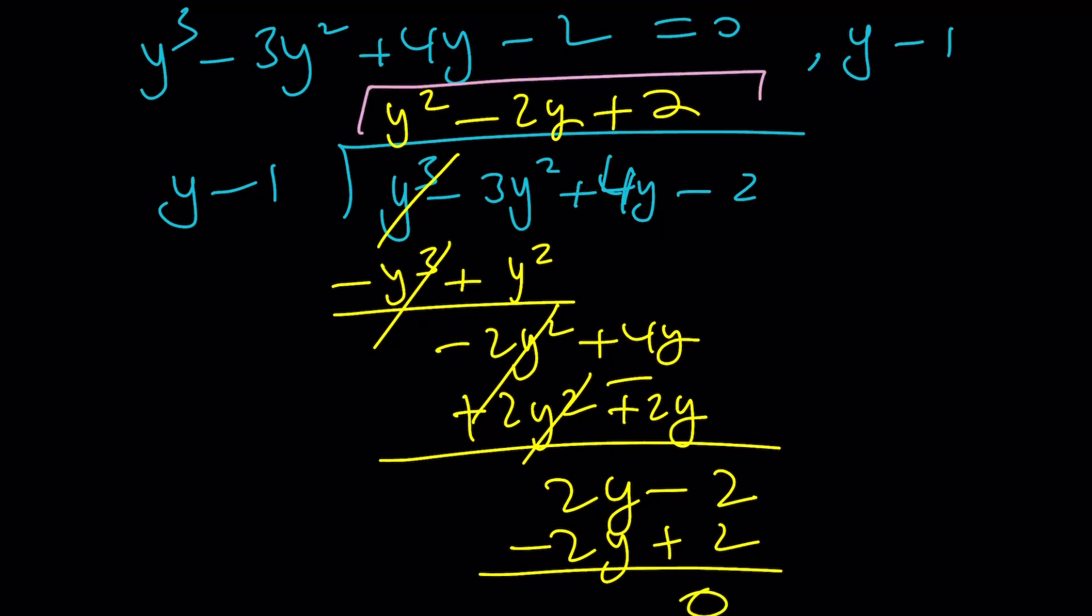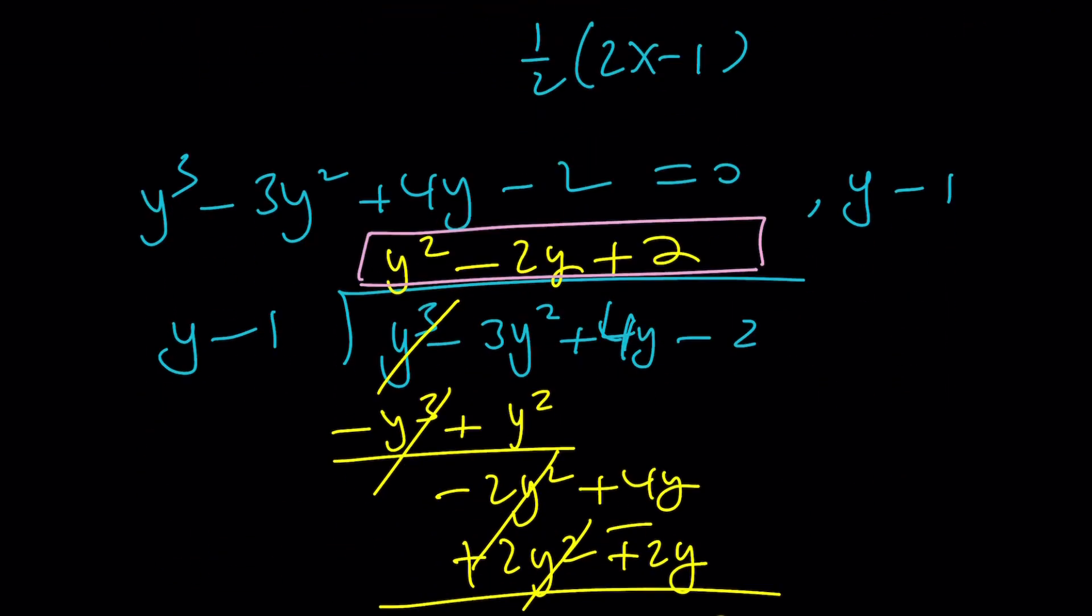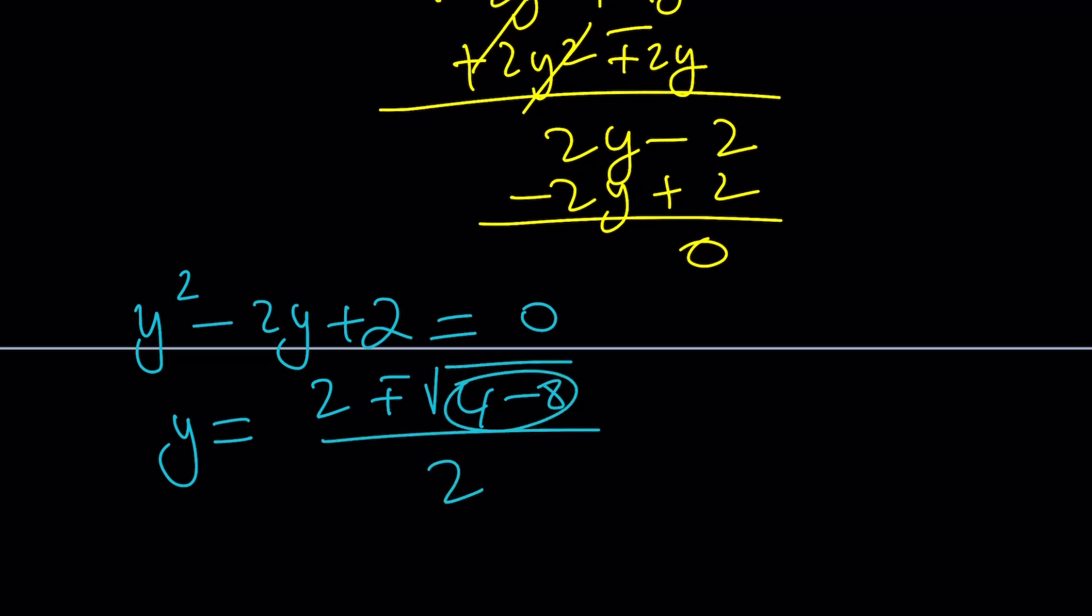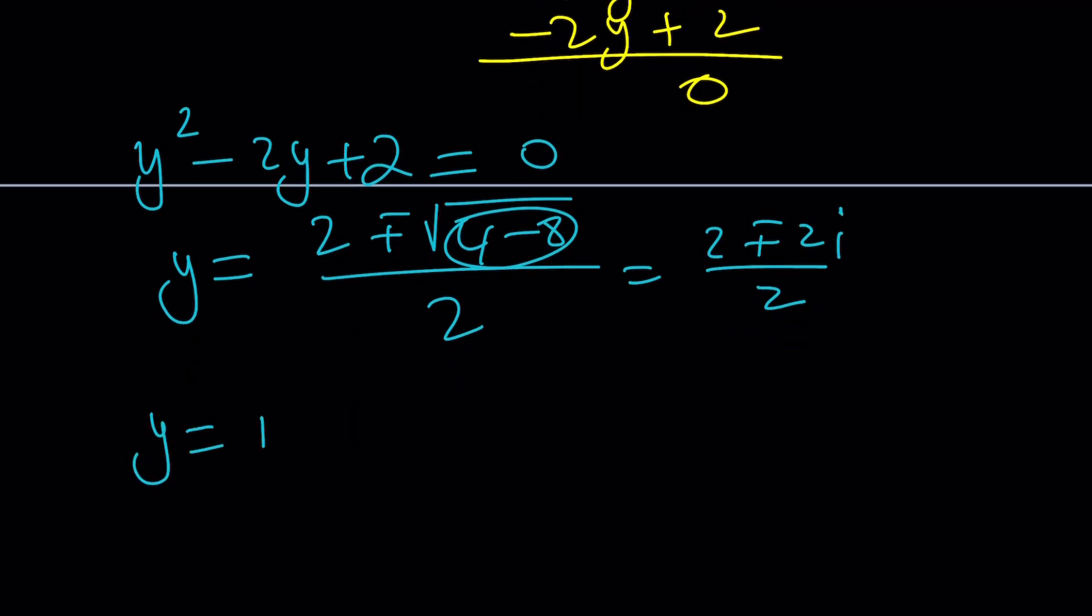So this is the quotient, which means to find the other y values, because we already know y = 1, or x = 1/2, we're going to solve the other equation, which is a quadratic. But it doesn't have any real solutions. No worries, we can still solve it with the quadratic formula. -b ± √(b^2 - 4ac), which is 8, divided by 2. That's going to be √(-4), which is 2i. 2 ± 2i divided by 2.